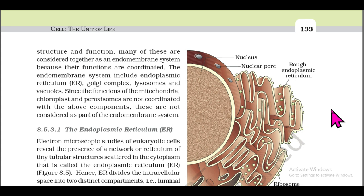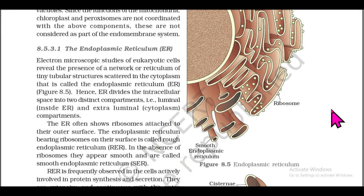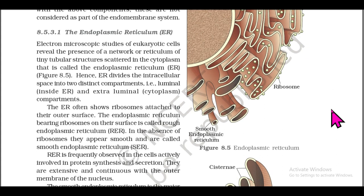Section 8.5.3: While each membranous organelle is distinct in terms of structure and function, many are considered together as an endomembrane system because their functions are coordinated. The endomembrane system includes the endoplasmic reticulum (ER), Golgi complex, lysosomes, and vacuoles. Since the functions of mitochondria, chloroplasts, and peroxisomes are not coordinated with the above components, they are not considered part of the endomembrane system.